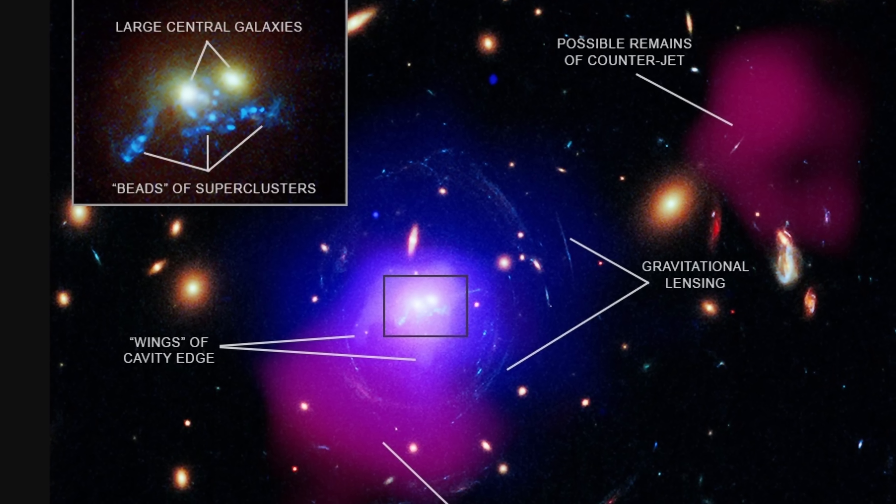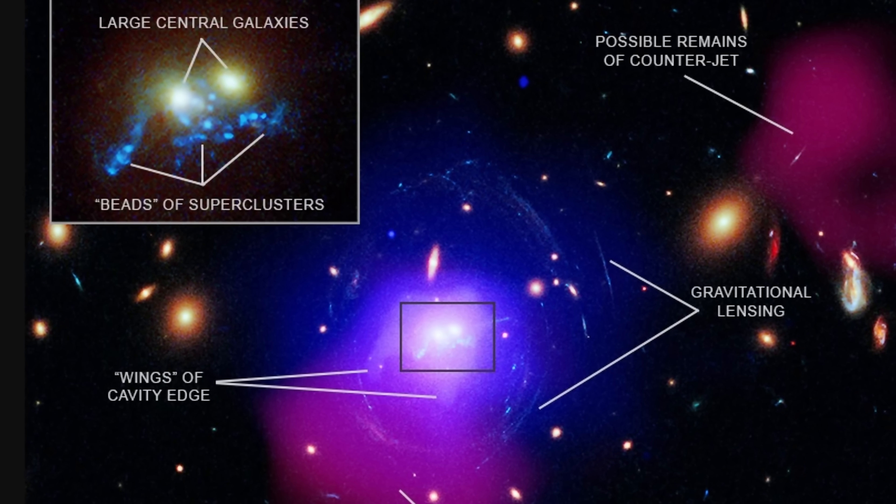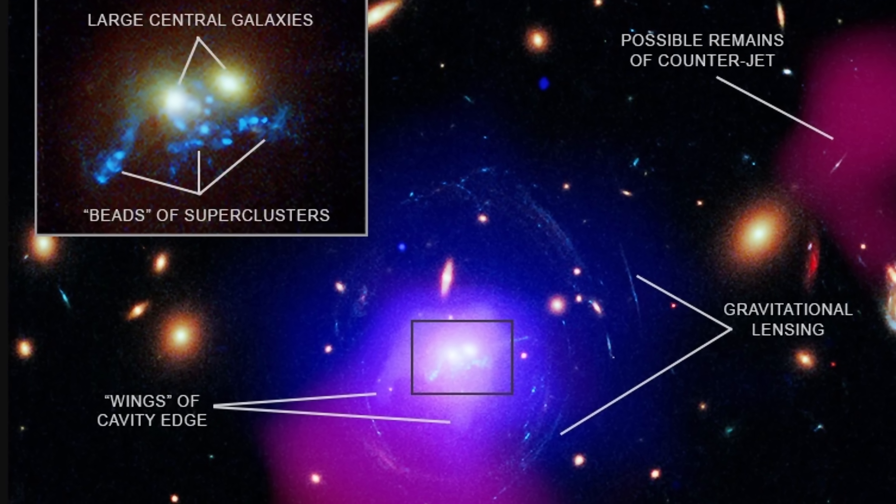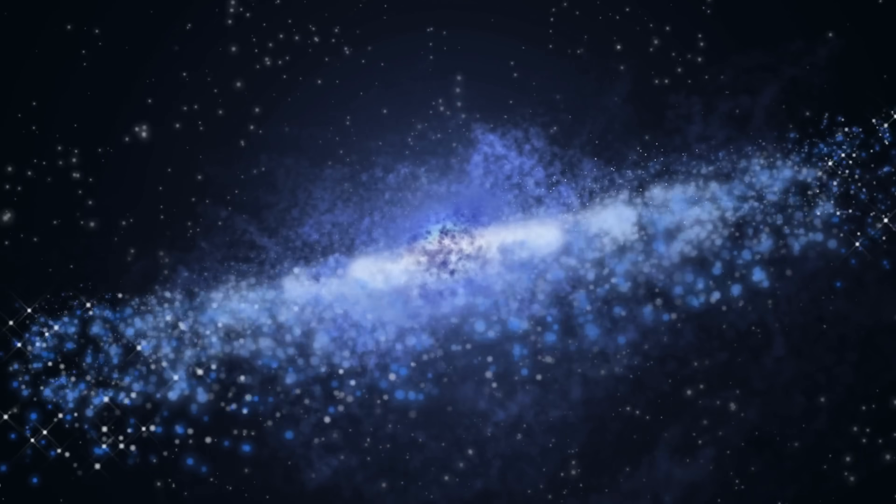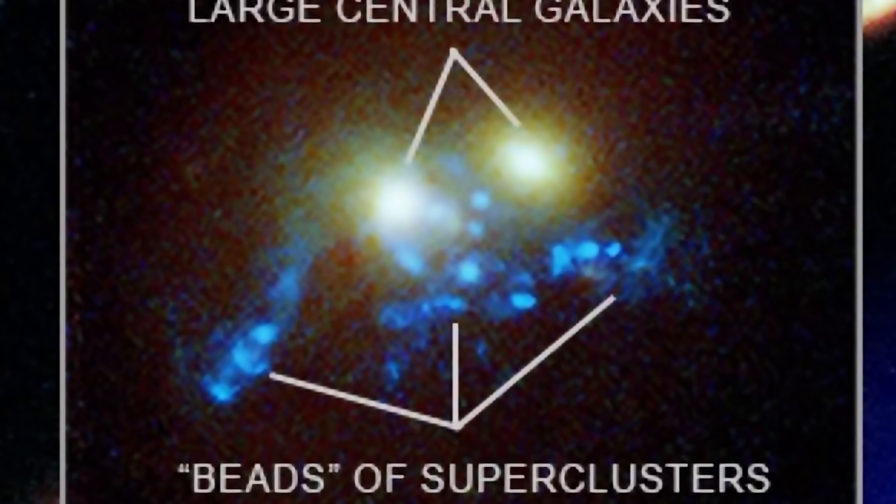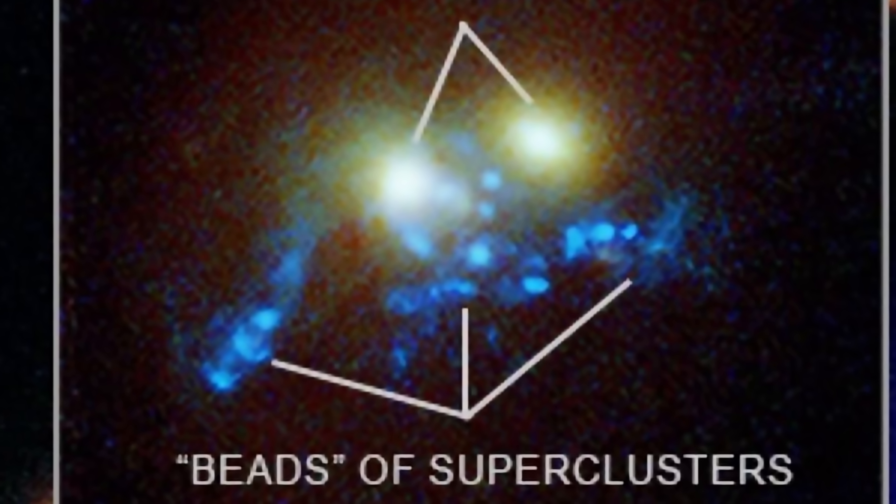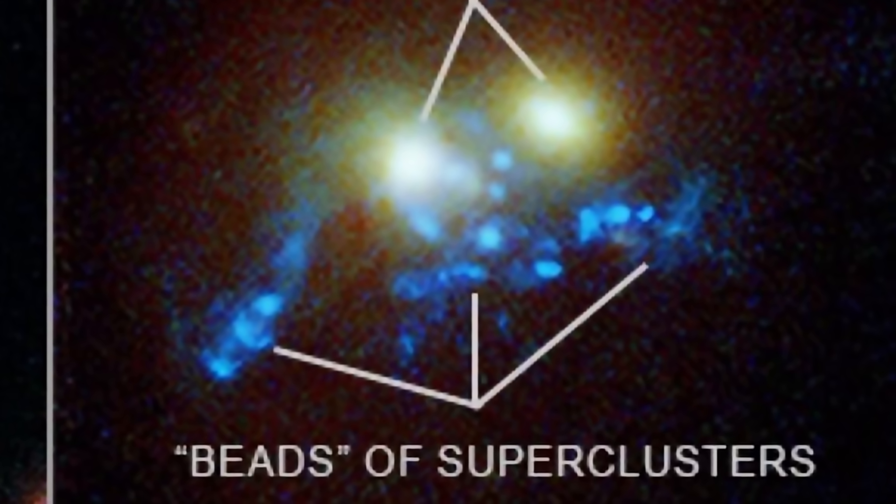But more importantly, as we've recently learned, these black hole jets can have dramatic effects on galaxies where they're located and even galaxies nearby. They can push a lot of gas around them, forming huge cavities, which can lead to star formation in what scientists refer to as beads on a string.